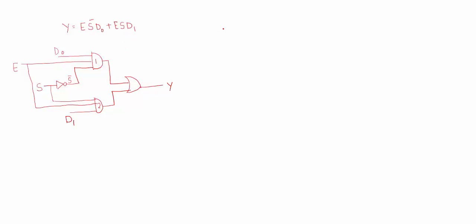Let us now see the working of a 2-to-1 multiplexer. When enable is 0, the enable line is connected to AND gate 1 and AND gate 2. Since one input to both AND gates is 0, the output of both AND gates will be 0, and therefore the output expression will be 0.